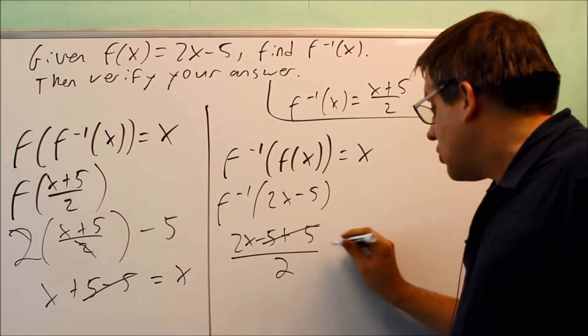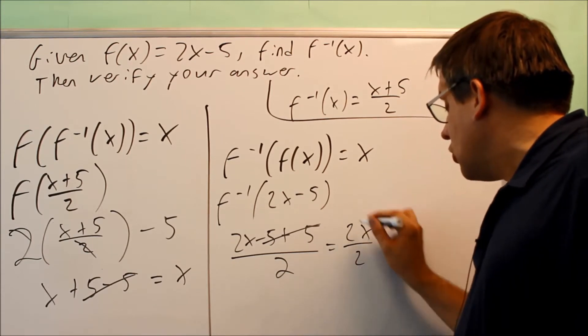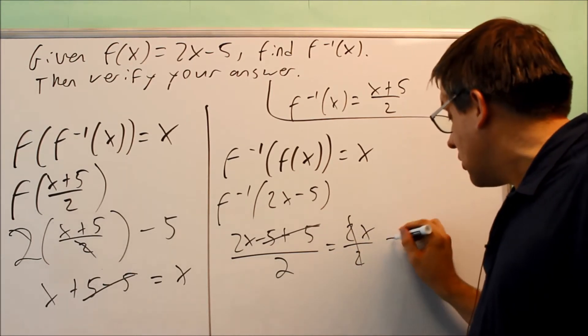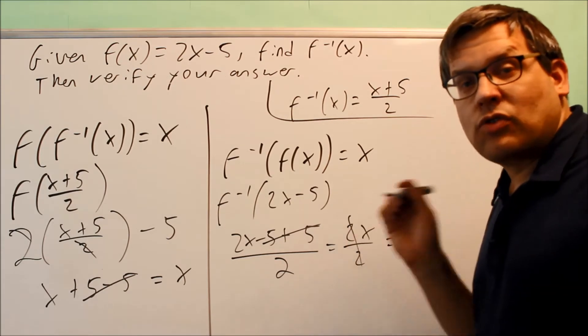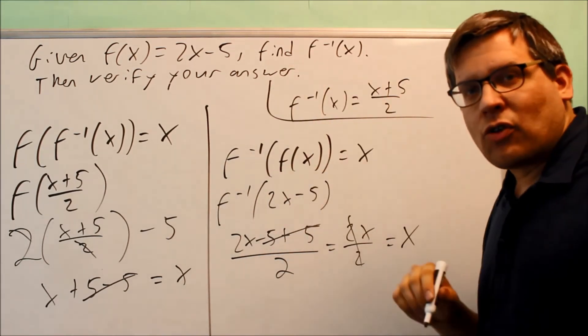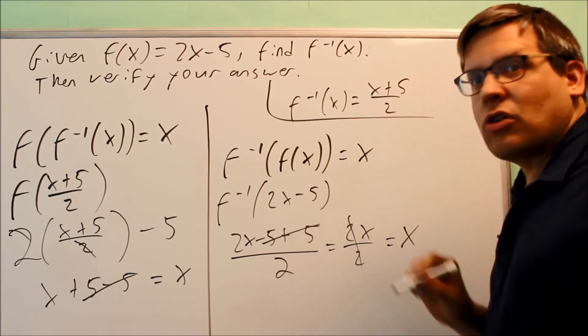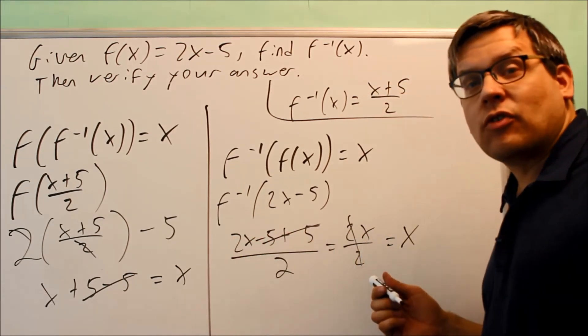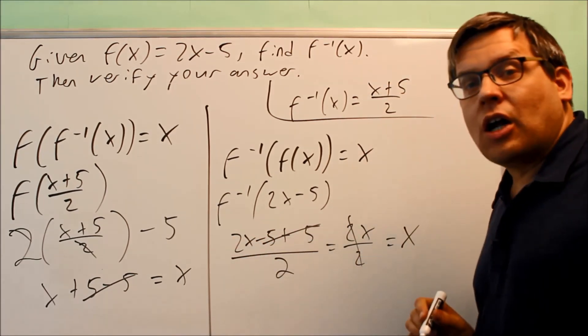What happens is the two 5's are going to cancel out, and I get 2x over 2, but then I can cancel out the 2's also, and I get x. So what I've done is I've just verified that the work that I did before by following those four steps, and I got this, that is the correct inverse because I have verified their inverses because I get x on both sides.